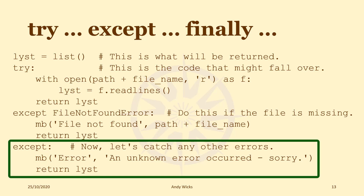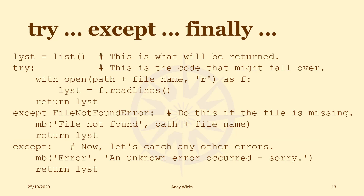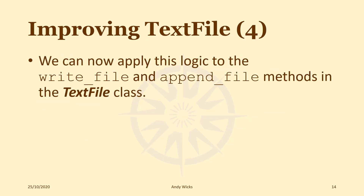I've also included a bare except — with no specific error after it — so if the try creates an error that is not a FileNotFoundError, it runs this code: an 'unknown error occurred, sorry' message, and again returns the empty list. So our program is consistent — it will always return a list, but if the file reading worked, that list will have the contents of the text file in it.